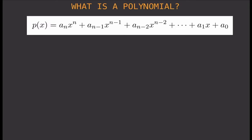Let me explain the details. So a-sub-n, a-sub-(n-1), a-sub-(n-2), and so on — a-sub-1 and a-sub-0 — these are your coefficients. Those that I marked in blue are the coefficients. Then we also have exponents: n, n-minus-1, n-minus-2, and so on, down to 1 and 0. You have a zero there — that's x to the power of zero. So those are your exponents.